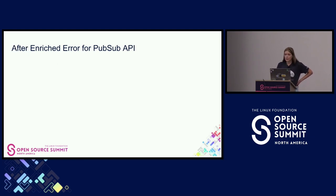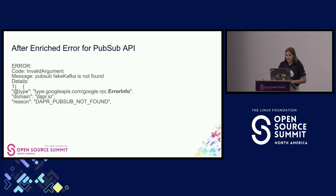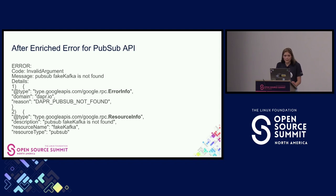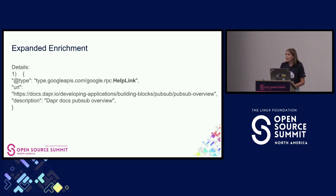So if you were to run that same gRPC curl in Dapr today, we'd get an enriched error back. We get back the same error code and error message — we cannot break our users, we have to ensure backwards compatibility, even if a different error code like 'not found' could make more sense. But now we get back those relevant error details, starting with our error info type, followed by a resource info type. This is a simple example, but for much more complicated errors this is super helpful. It can even be expanded with a help link error detail type, giving users very actionable information so they're a click away from enabling themselves.